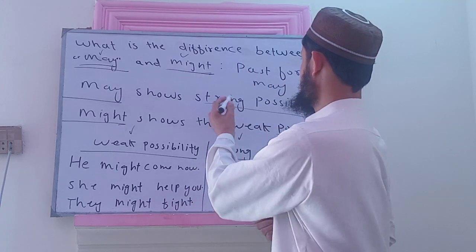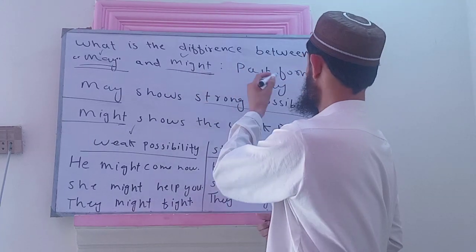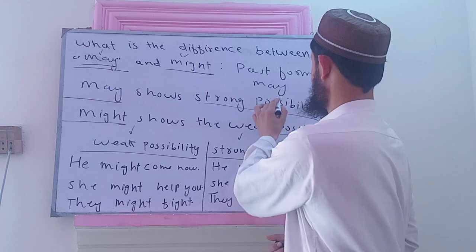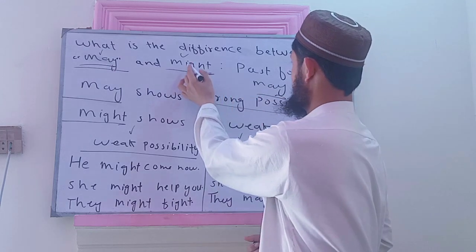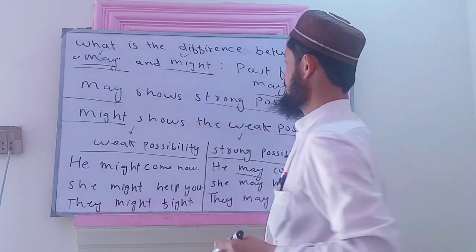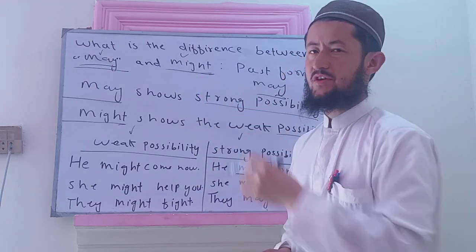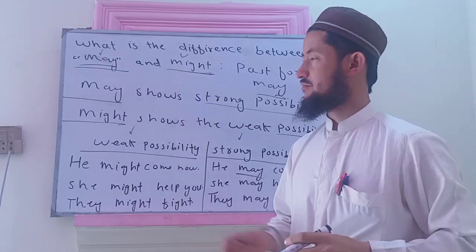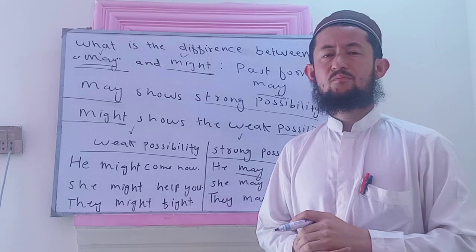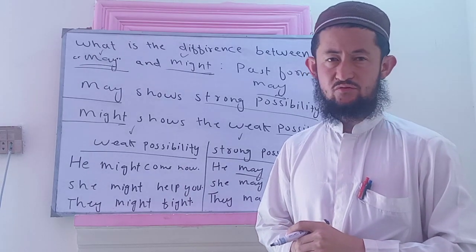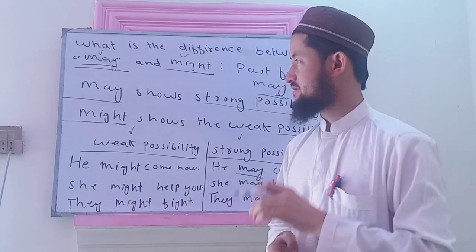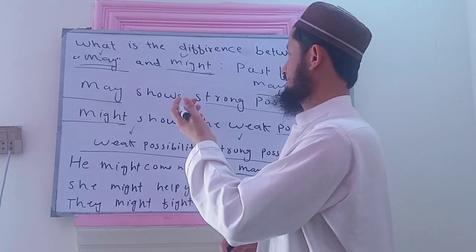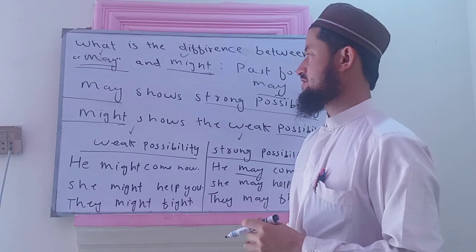First of all, might is the past form of may. Might is the past form of may. Kia might, may ka past form hai — that is the first difference.